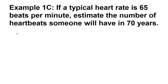A typical heart rate is 65 beats per minute, and we want to estimate the number of heartbeats someone will have in 70 years. The 70 years is the specific time frame the question asks us to convert into heartbeats, and the heart rate of 65 beats per minute is a conversion factor for this problem. Although it looks like a rate — and it is — we can also treat it as a conversion factor.